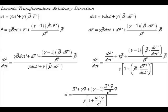Here I derive the velocity addition formula for Lorentz transformation with arbitrary direction. Since gamma and beta are constants, and given the way I've defined the inner product, differentiating the transformation yields the right-hand side top two equations. Dividing the bottom one by the top, I get dr/dct. Dividing both the numerator and the denominator by dct prime and factoring out a gamma on the bottom, I get the velocity addition formula for arbitrary direction of velocity between the frames, expressed in terms of u, u prime, and v.